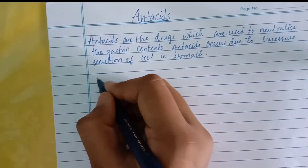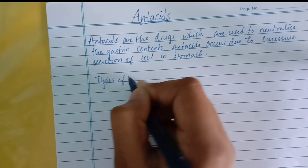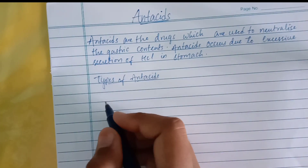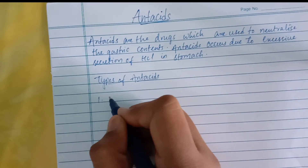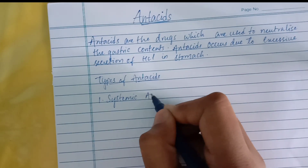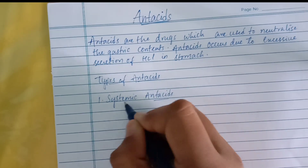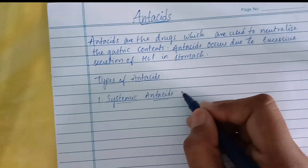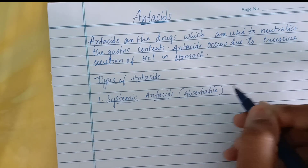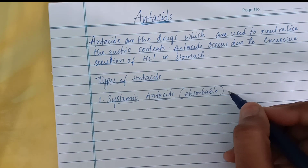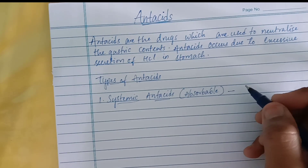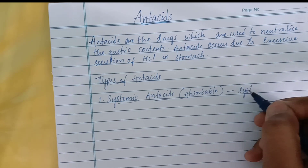There are two types of antacids. The first one is systemic antacids. In short, systemic antacids are absorbable antacids — that is, the antacid which is absorbed easily. Let us get to know the definition of systemic antacids.